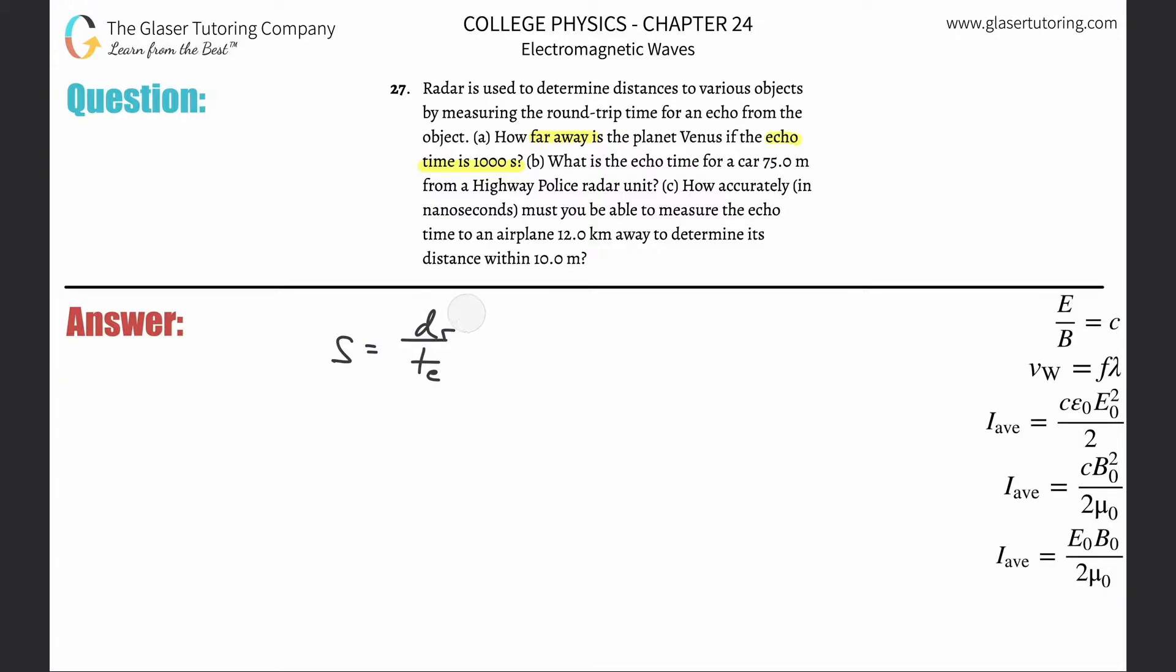Or what you can do is you can erase then the round-trip distance and you can plug in then two times the distance, or the one-way distance. Either way, however you want to do it, that's fine. But anytime they're asking you to solve for how far away, they're asking for the one-trip distance, or the distance just between the two. So I'm going to use this formula.